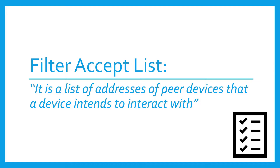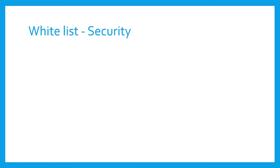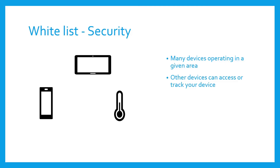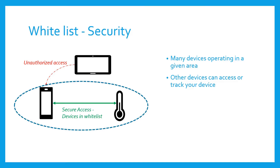Now why is whitelist or filter accept list needed? The first reason is there can be many BLE devices operating in a given area and it isn't essential to interact with all of them. Most probably you wouldn't want other devices which aren't of any interest to be able to access or, worst, track your device. Thus for security reasons you may want to restrict access to only a certain set of devices. So security is the first reason.